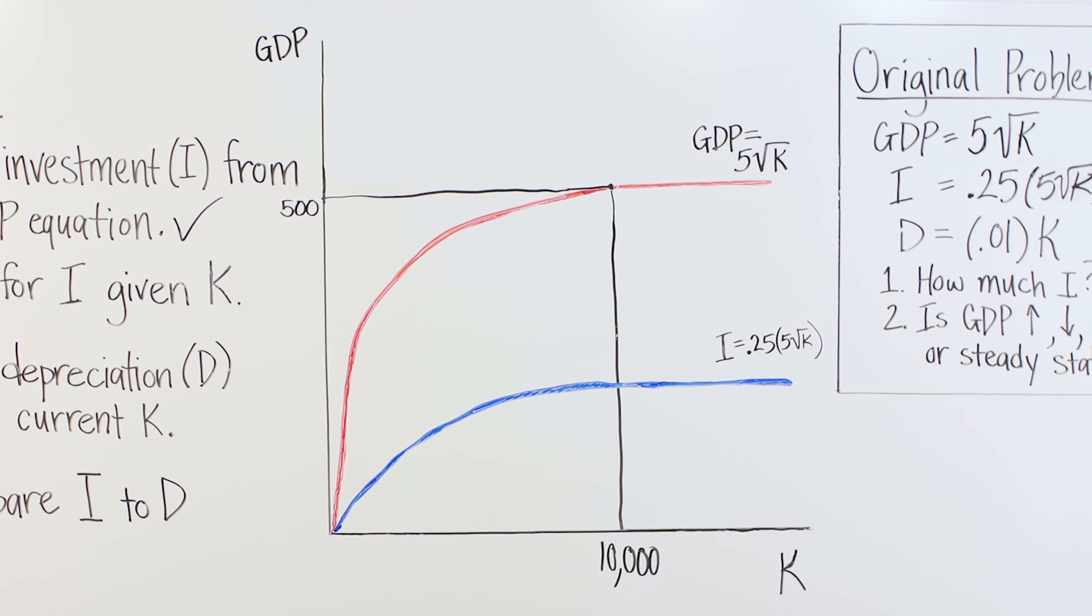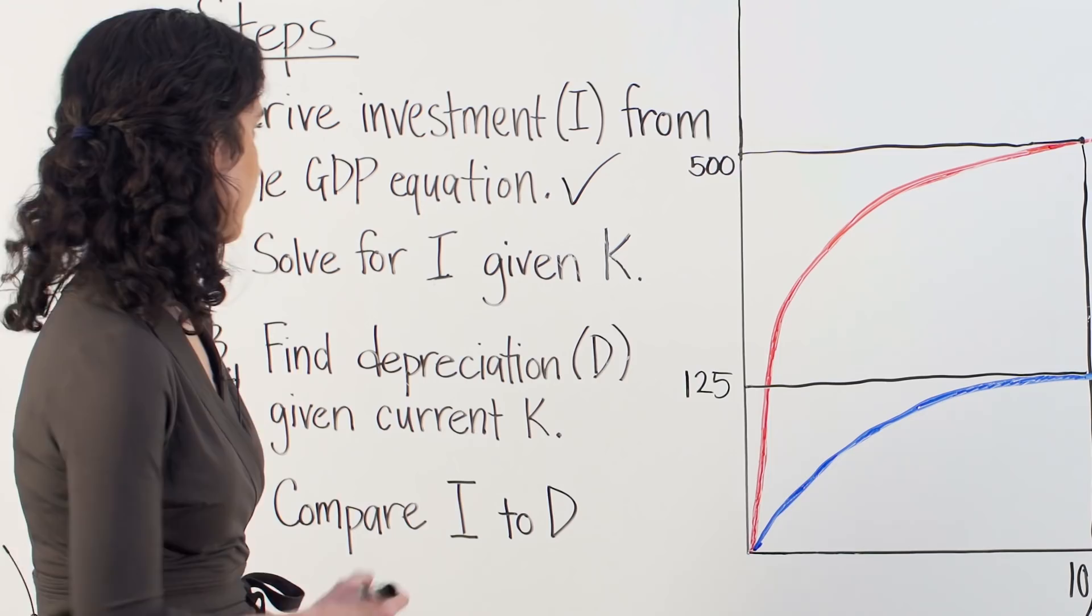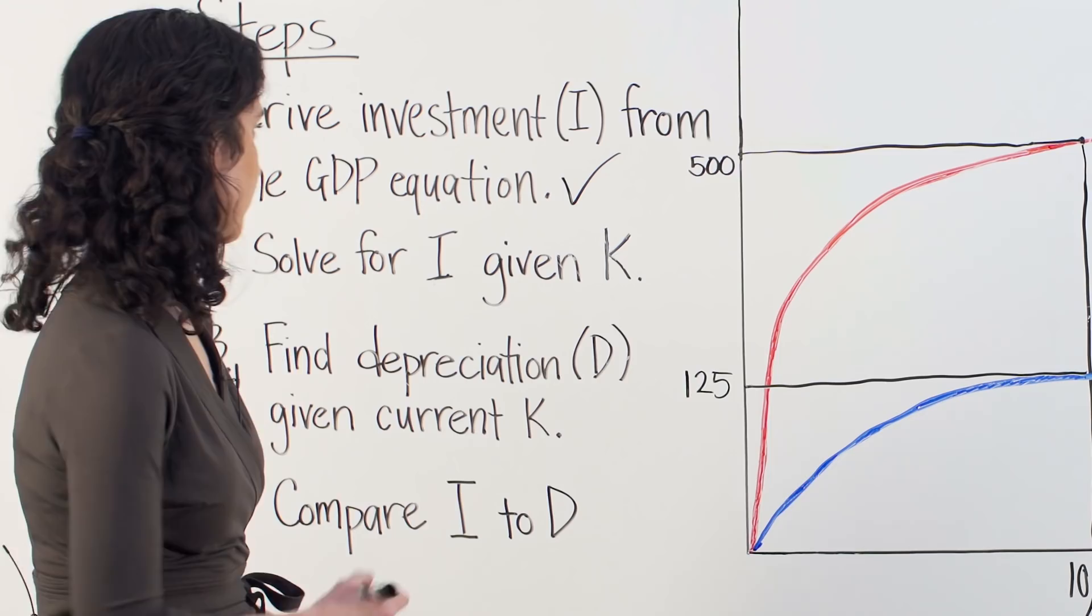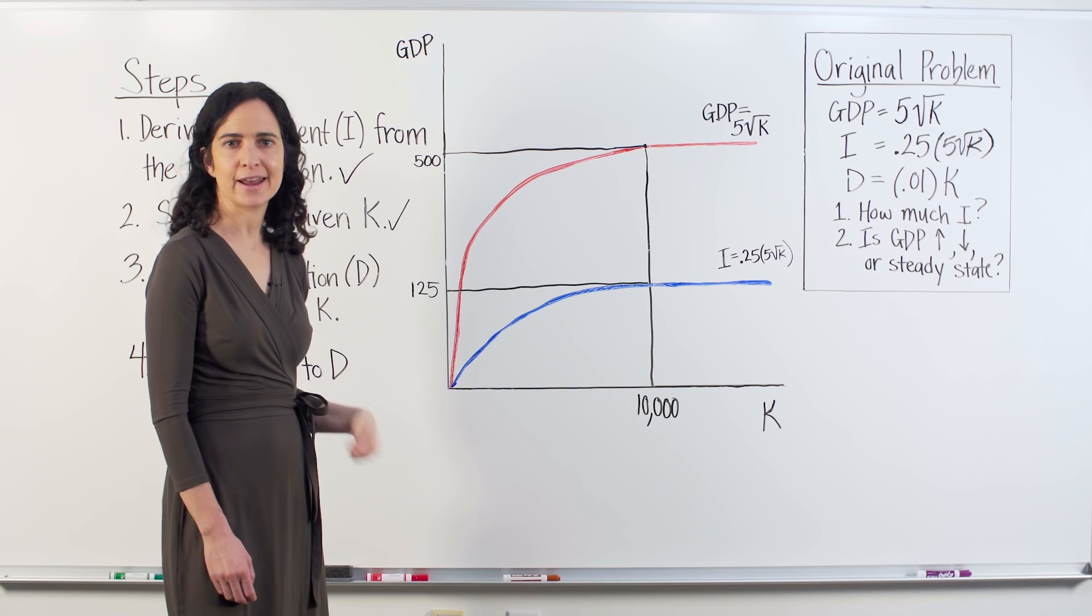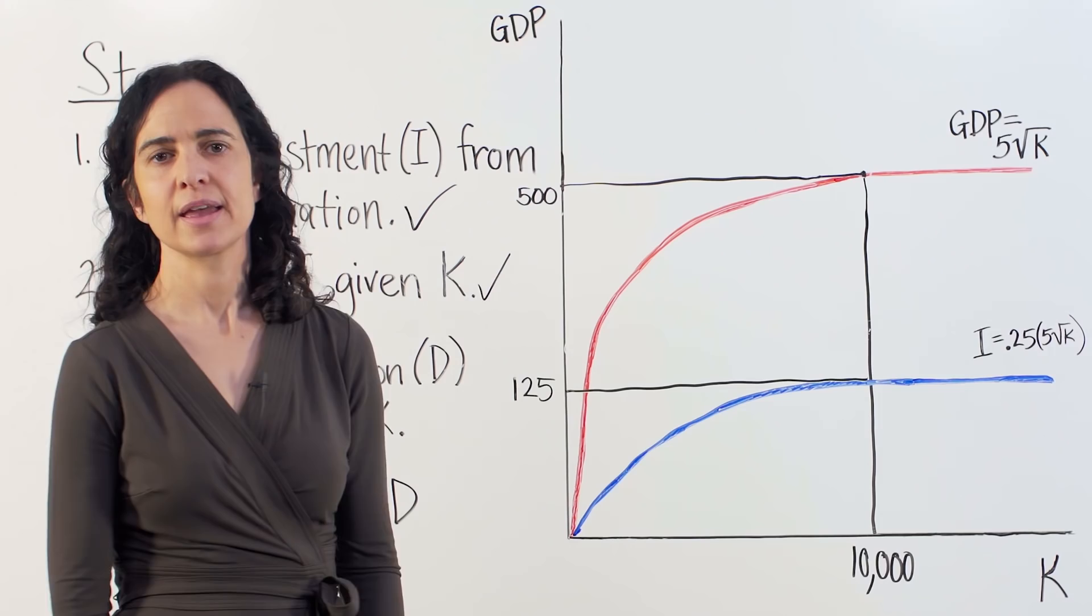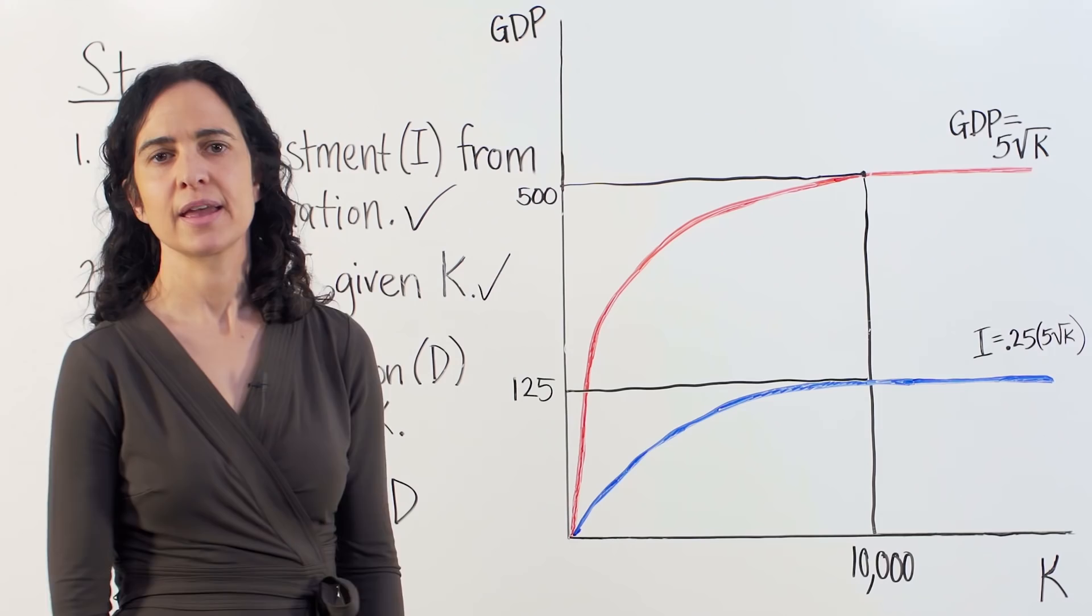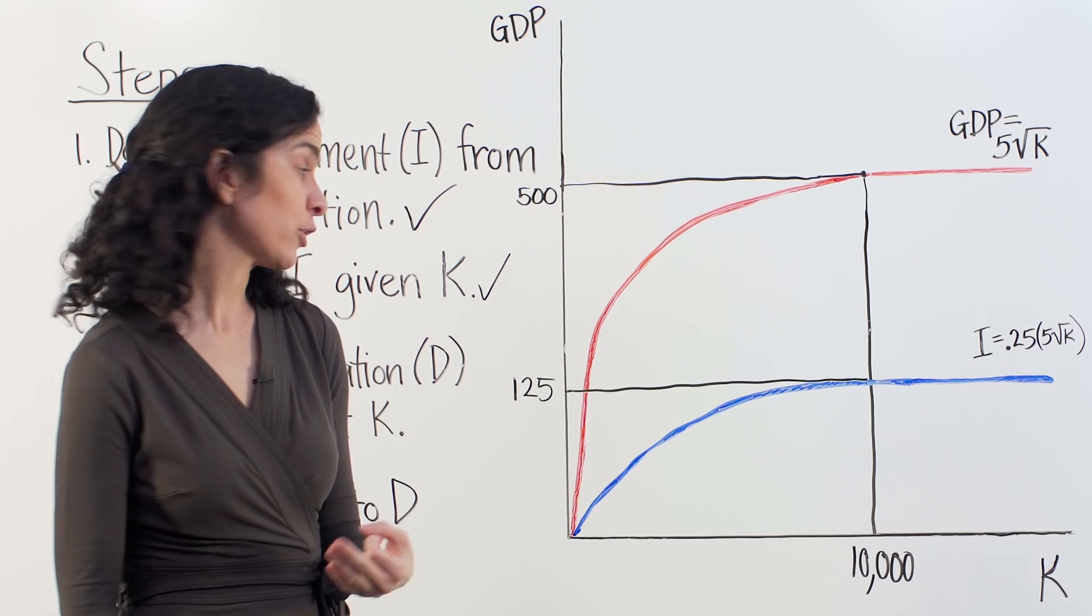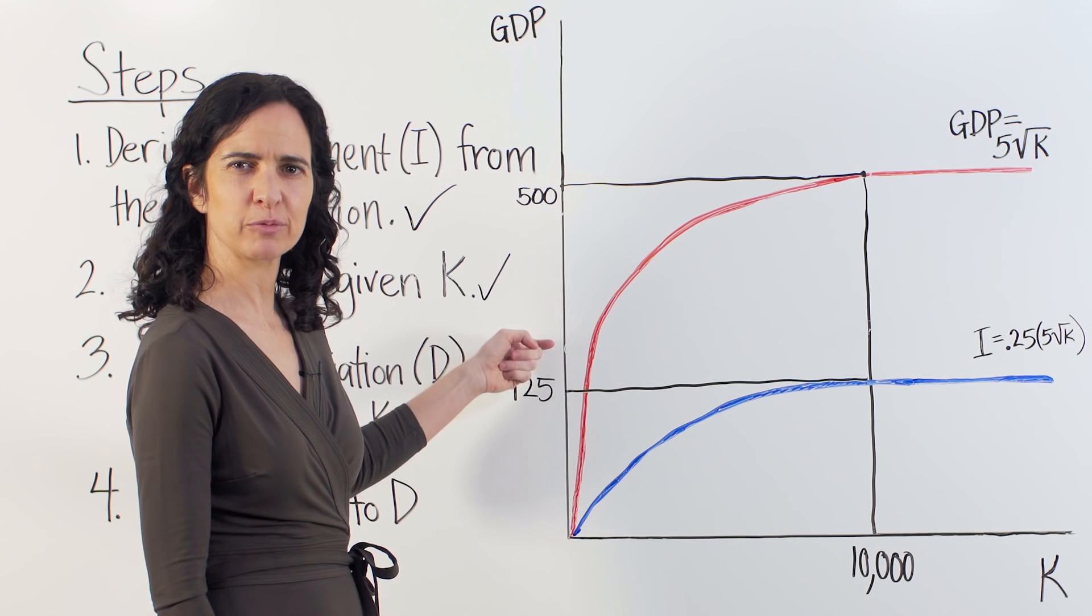A few quick things to note here. Several variables are actually measured along the y-axis. Not just GDP, but we're also measuring investment. And eventually we're going to add depreciation. In general, it looks pretty cluttered if we were to add all of those labels up to the top, so we'll just leave it at GDP. And one other thing to note. If we're investing 125 and total GDP is 500, what's happening to that remaining GDP? It's being used for consumption. You know, buying stuff. One of the follow-up questions at the end of this video actually tests your understanding of this.